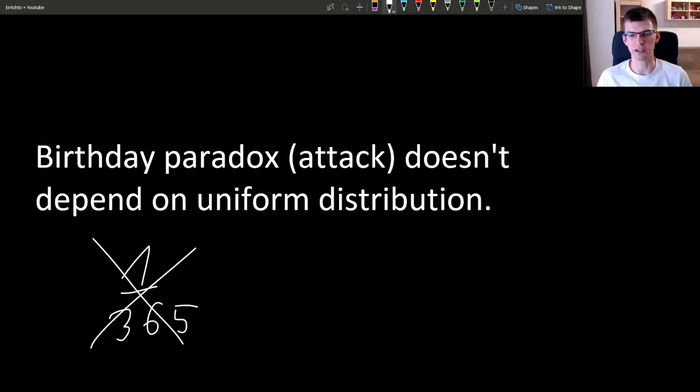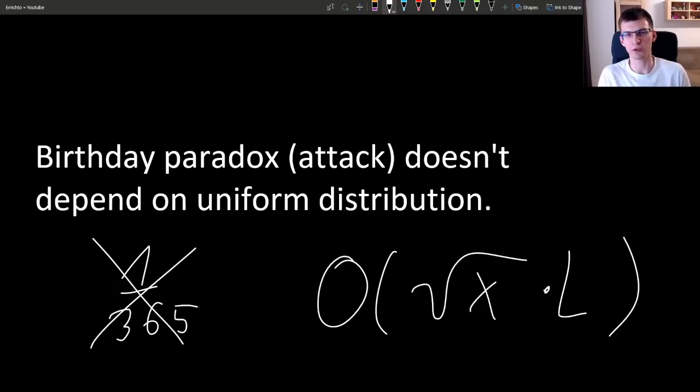And this is why we can say that the complexity of our solution is O of square root of x times L for operating numbers of length L, times some small constant like 10, so that we would be sure that there are indeed 2 equal numbers.